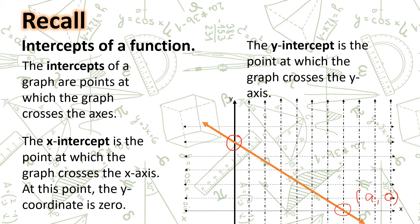The y-intercept is the point at which the graph crosses the y-axis. At this point, the x-coordinate is zero. Hence, the coordinates of the point at the y-intercept are (0, b), where b is any real number.